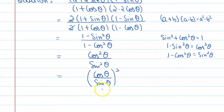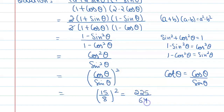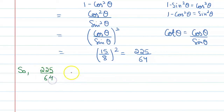We have been given cot theta is 15 by 8. We can say that cot theta is also equal to cos theta upon sine theta. So cot squared theta equals 15 by 8 squared, which gives us 225 upon 64 as the answer.